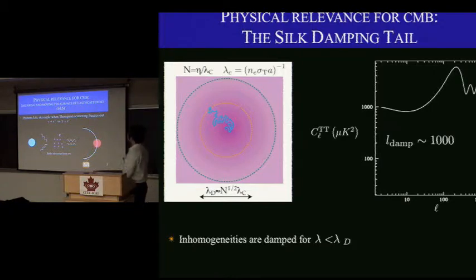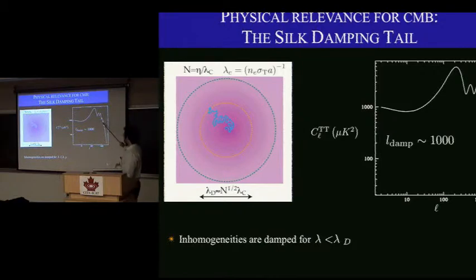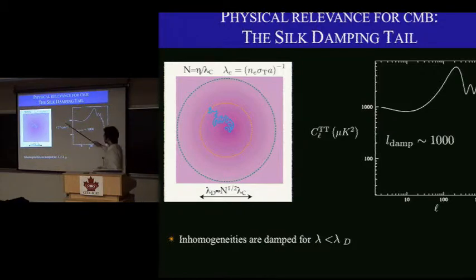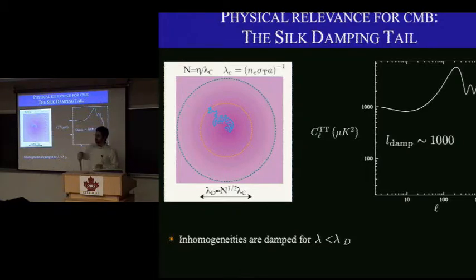Another physical effect is high-L damping in the CMB anisotropies — so-called Silk damping. That picks up at the length scale of a random walk of a photon as it Thomson scatters off of electrons, and again that length scale is related to the free electron density.